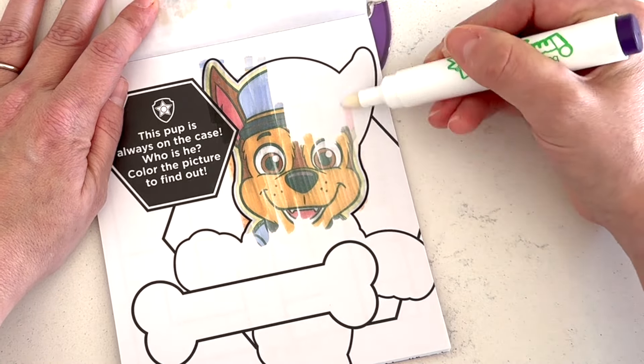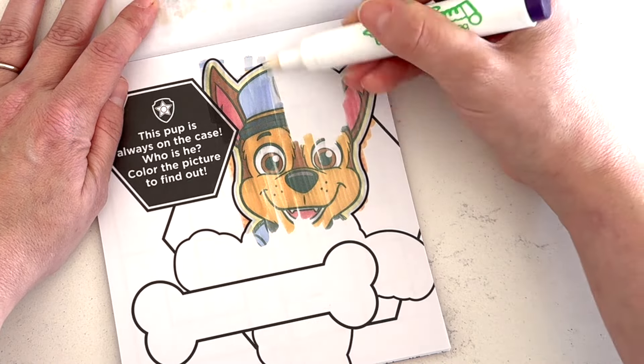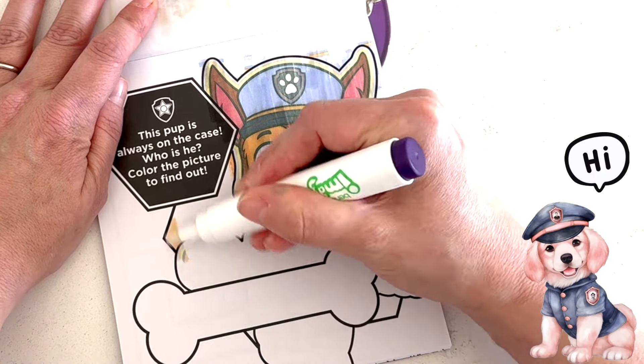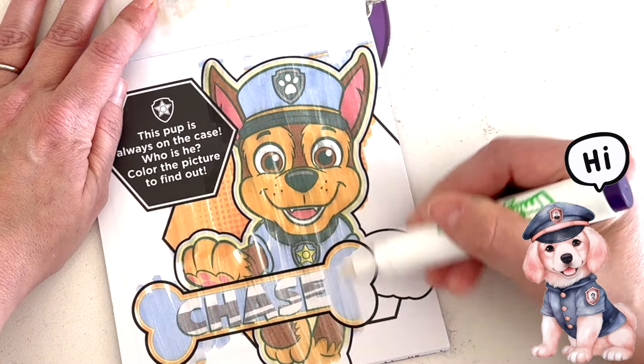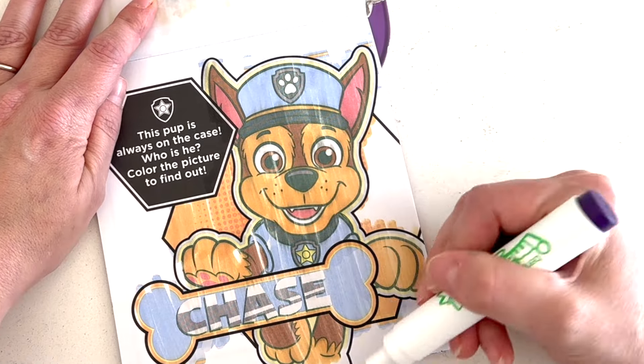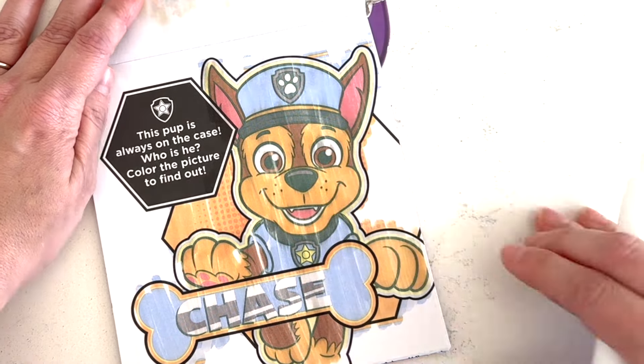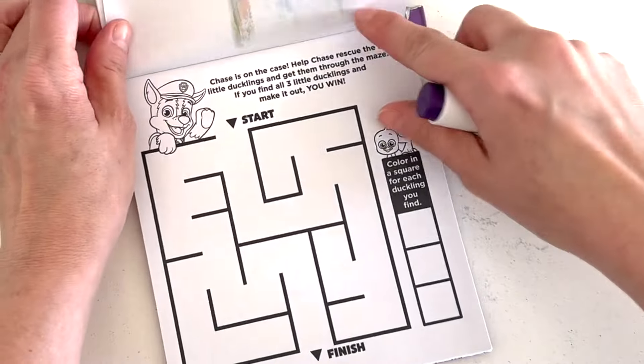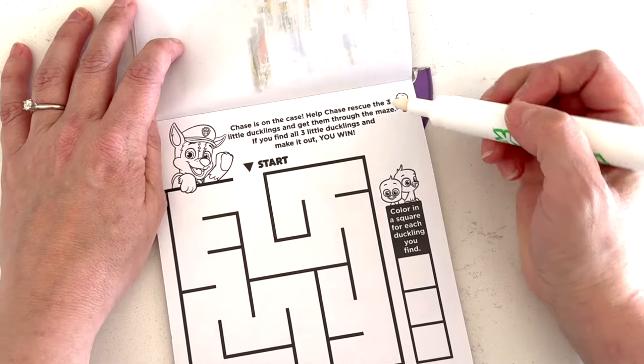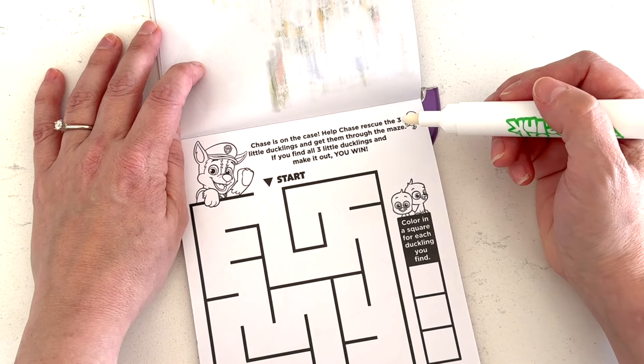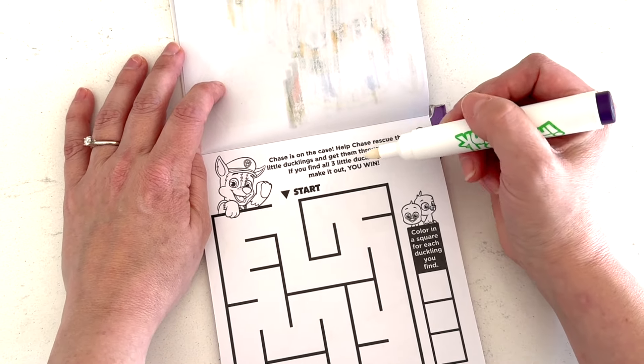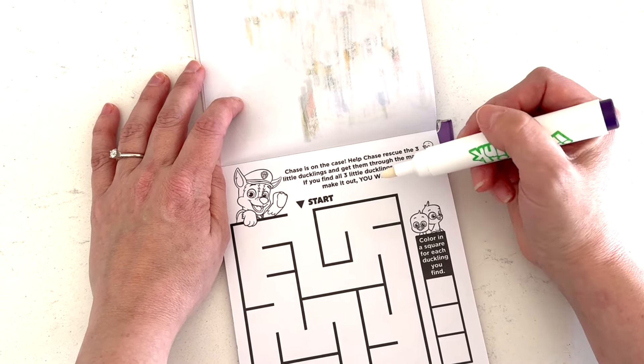This pup is always on the case. Who is he? Color the picture to find out. Which pup is always on the case? Is it Marshall? No! Chase is always on the case. There we go. It says Chase. Next page.